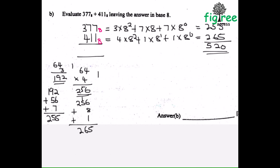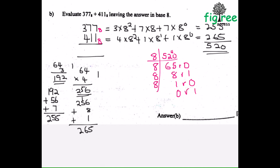520 must be converted to base 8, which is the next step. So divide by 8: 8 into 520 — 8 into 52 is 6, remainder 4. 8 into 40 is 5, remainder 0. Then 8 into 65 is 8, remainder 1, since 8 times 8 is 64. 8 into 8 is 1, remainder 0. 8 into 1 is 0, remainder 1. Reading from down up: 1, 0, 1, 0 — just like the answer found using the other method. So the answer is 1010 base 8. Do not forget to write the base.